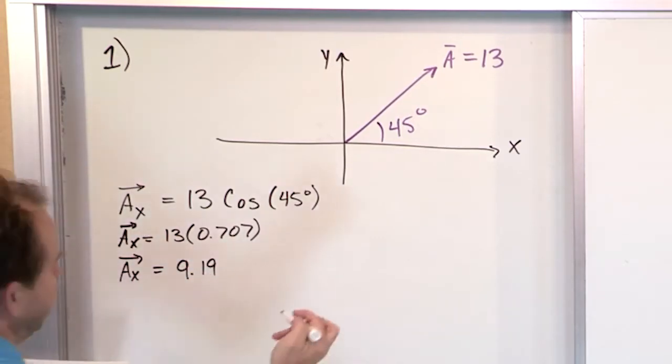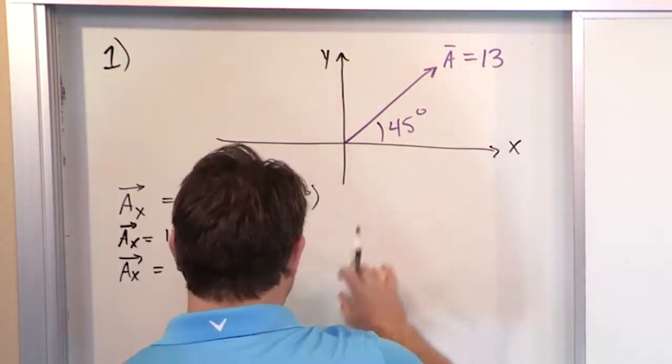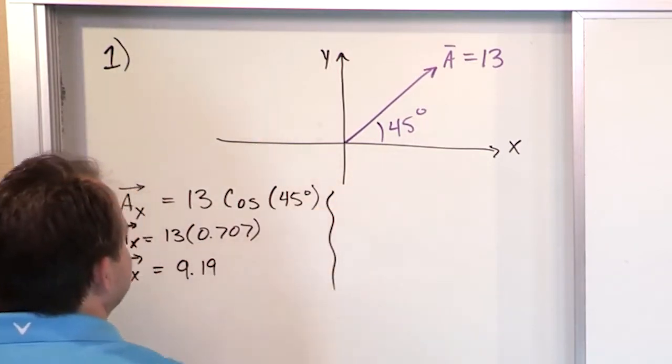So that Ax is going to be equal to 13. You take the cosine of 45, you get 0.707 in your calculator. That's a truncation. It really goes on with more decimals there. 9.19 what? Well, it depends on if it was meters, it'd be 9.19 meters. If it was meters per second, it'd be meters per second. I haven't even given you any units here, so we're just going to leave it alone at 9.19.